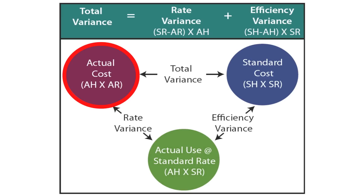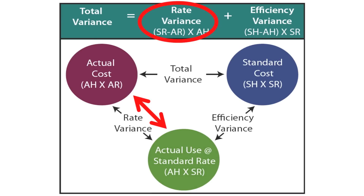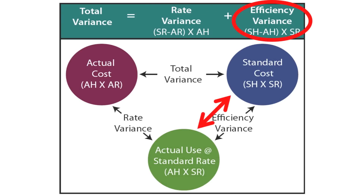Here's the framework: the actual cost for labor is actual hours worked times actual rate, compared to the standard cost of standard hours that should have been used times the standard rate. The difference is the total variance, which we break down between the rate variance and efficiency variance. The rate variance is actual hours times standard rate compared to actual cost — the difference in hourly rate times actual hours worked. The efficiency variance compares standard hours versus actual hours times the standard rate. The sum of those two variances equals the total variance.